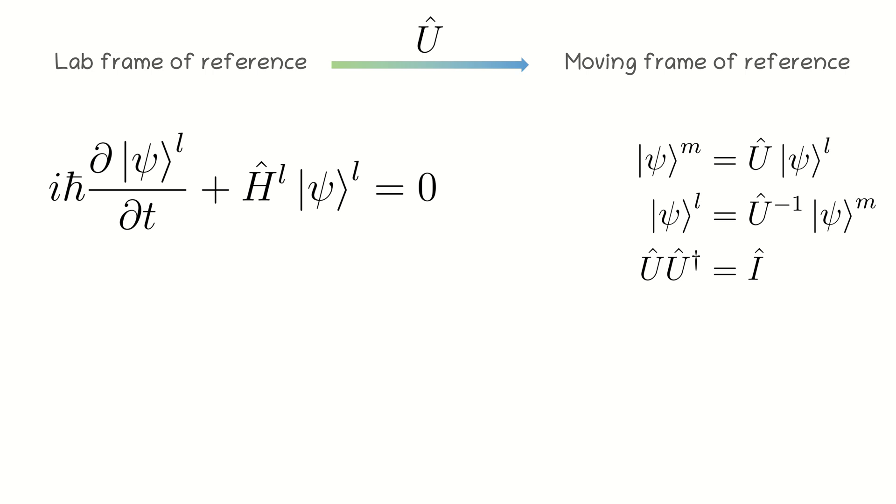First, we use the Schrödinger equation in the lab frame and substitute the expression for the lab frame wave function, which is the inverse evolution operator acting on the wave function in the moving frame.